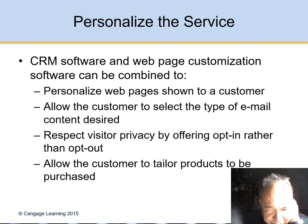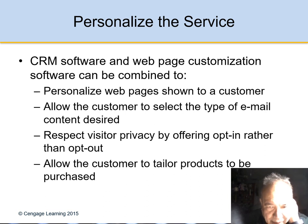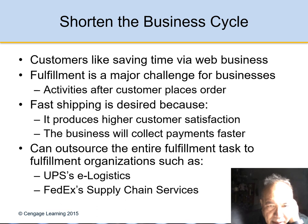To personalize the service, CRM software and web page customization software can be combined to personalize the web page shown to a customer, allow the customer to select the type of email, respect people's privacy, and allow the customer to tailor the product to be purchased. Shortening the business cycle is also important — customers like saving time, and if it takes too long to find things on the web, the customer won't be happy.